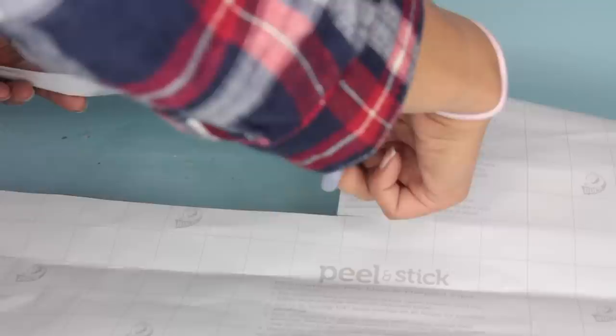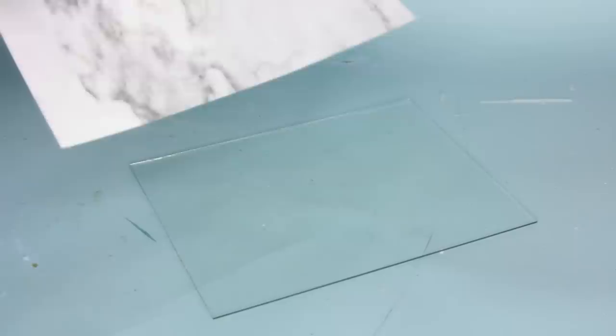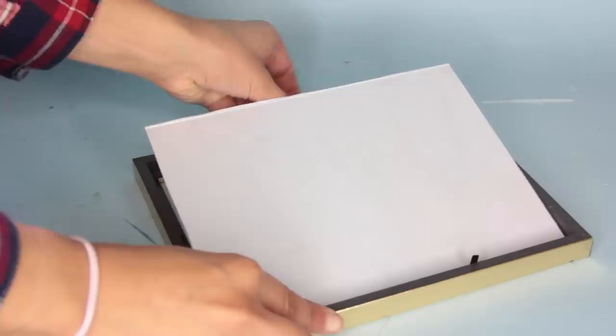Once you've got your contact paper cut up, you go ahead and peel the backing off of it and then apply it to the glass. Once you've got it on top of the glass, you want to make sure you use your hand to rub out any air bubbles, and then you can place the piece of glass and contact paper back into the frame.